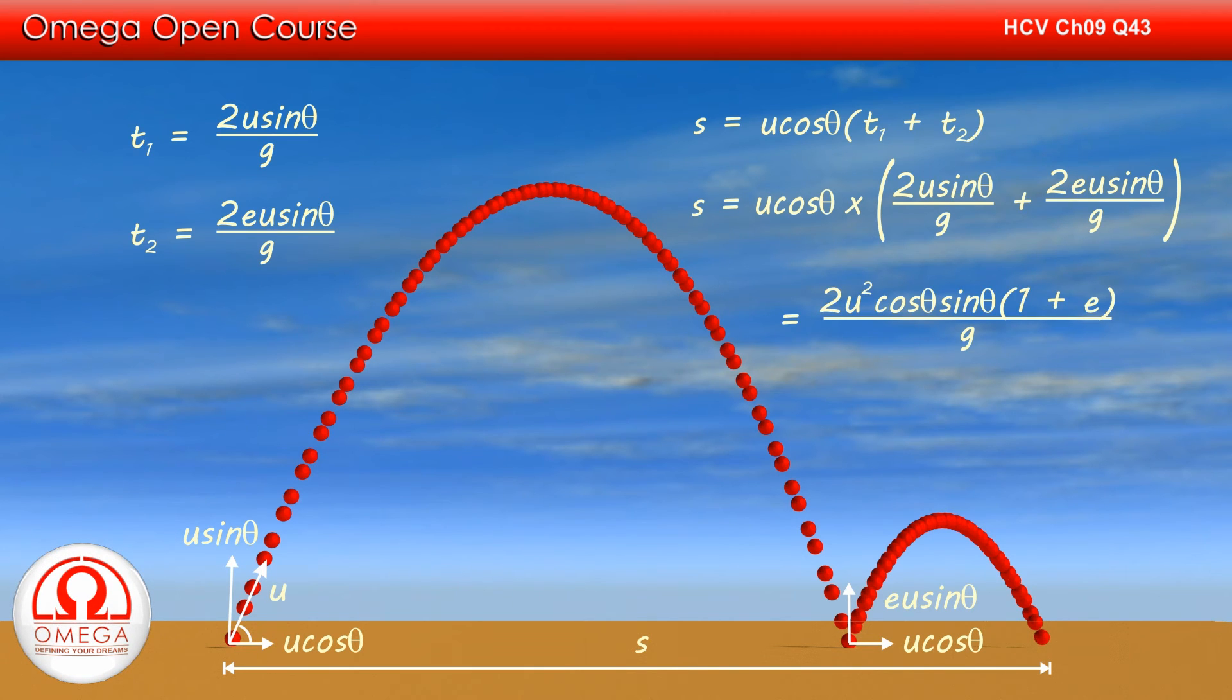Simplifying, we get s is equal to 2u square cos theta into sin theta into 1 plus e divided by g. Putting 2 sin theta into cos theta is equal to sin 2 theta, we get s is equal to u square sin 2 theta into 1 plus e divided by g. This is our answer.